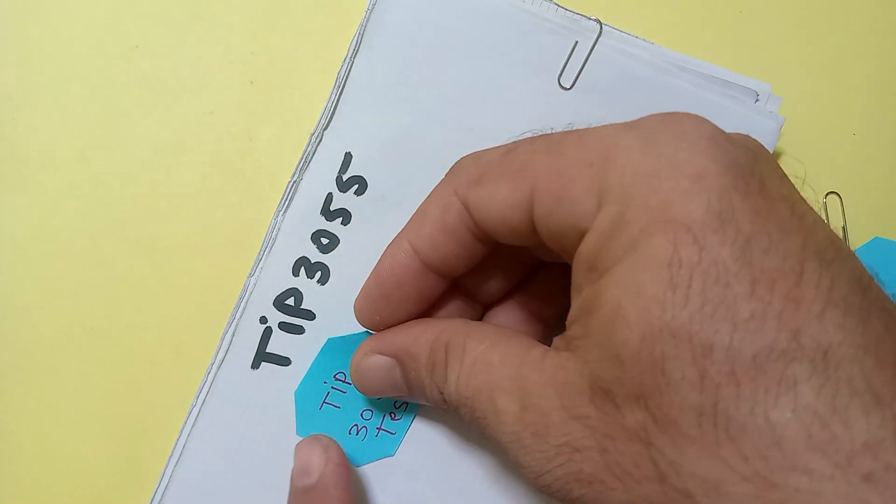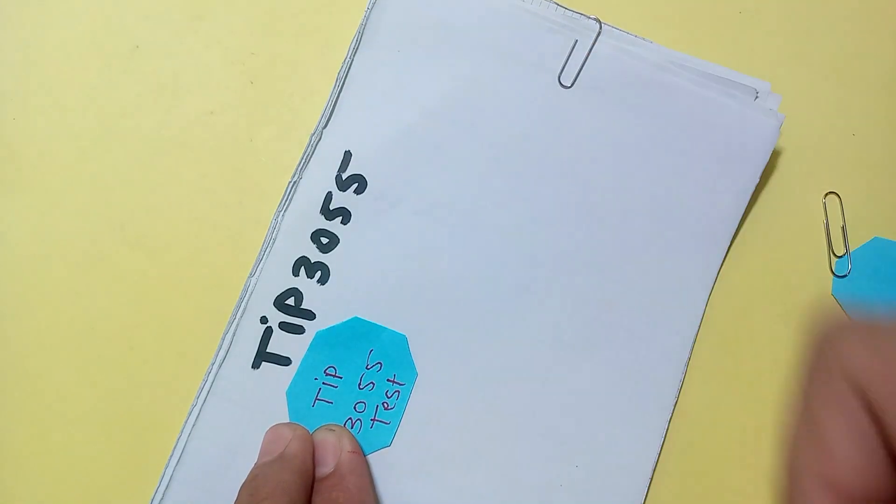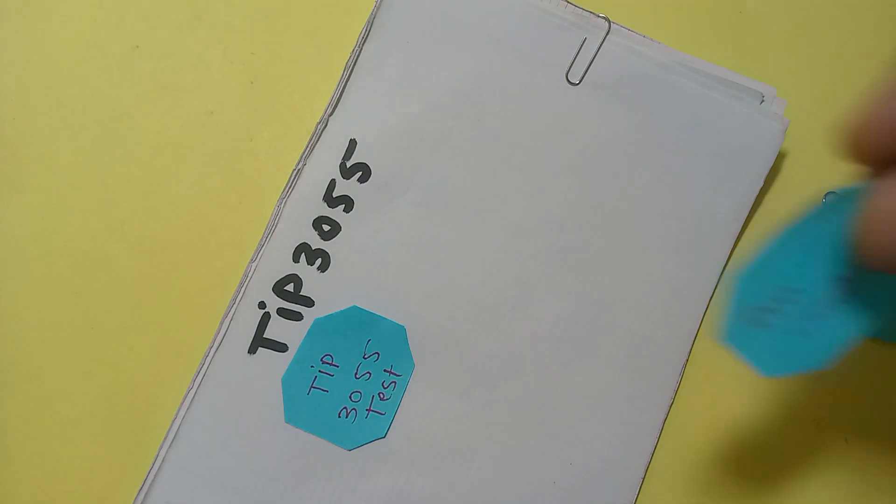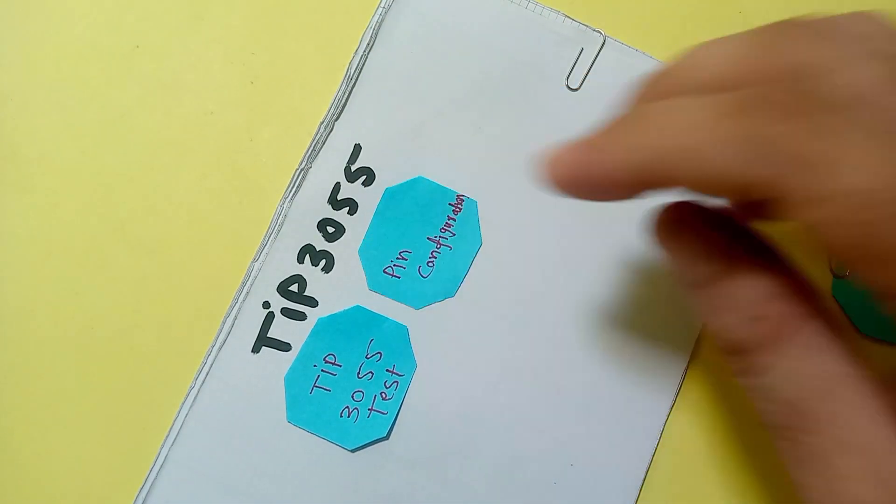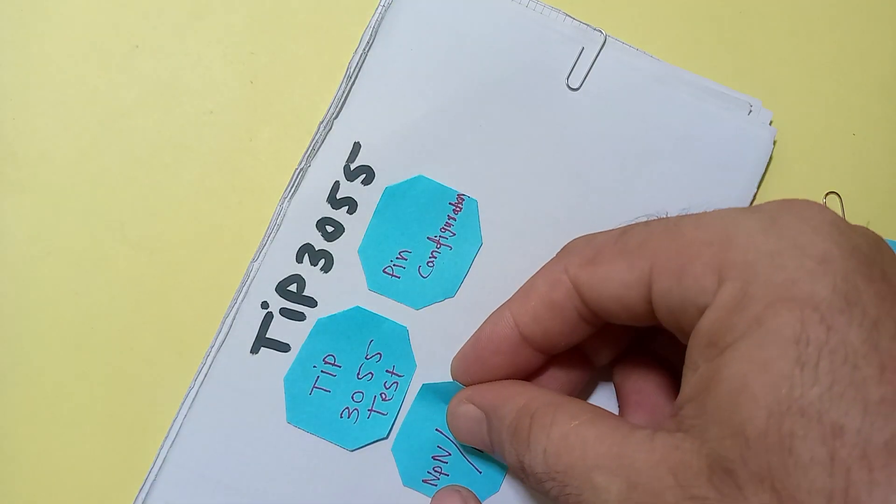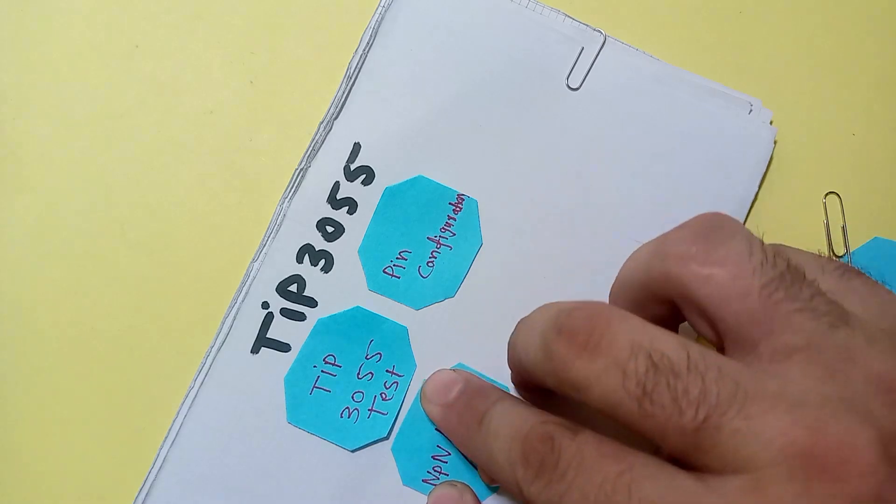Such as how to test TIP3055 by multimeter, how to find the pin configuration, whether it's NPN or PNP type transistor.